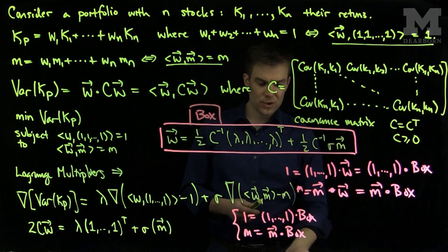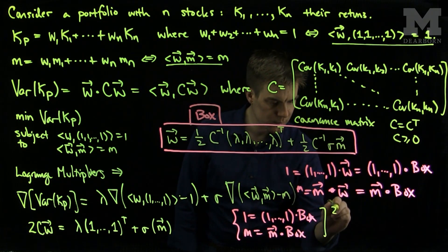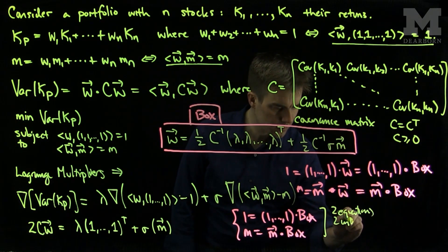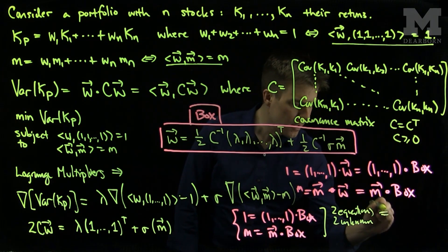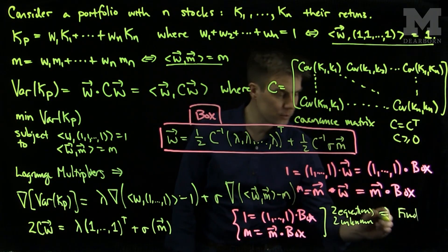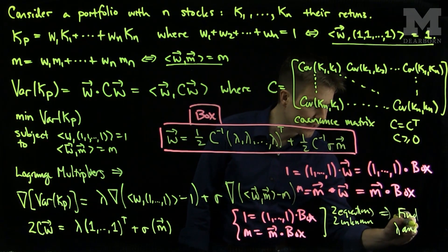These are two equations, two unknowns. We can use these two equations, and that means we can find, from these two equations, two unknowns, both lambda and sigma.